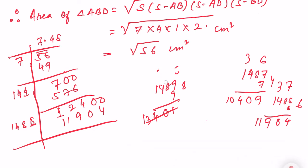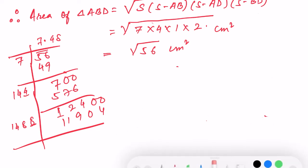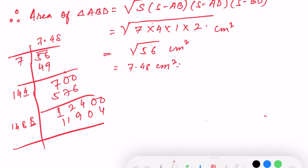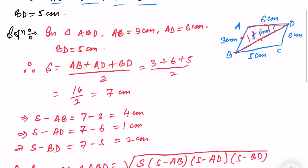The result is 7.48. So the area of triangle ABD is equal to 7.48 cm².